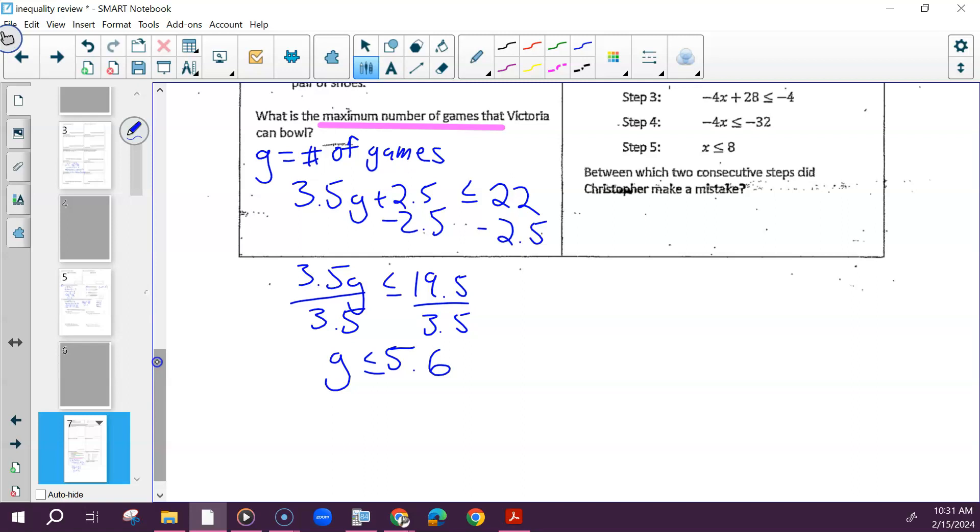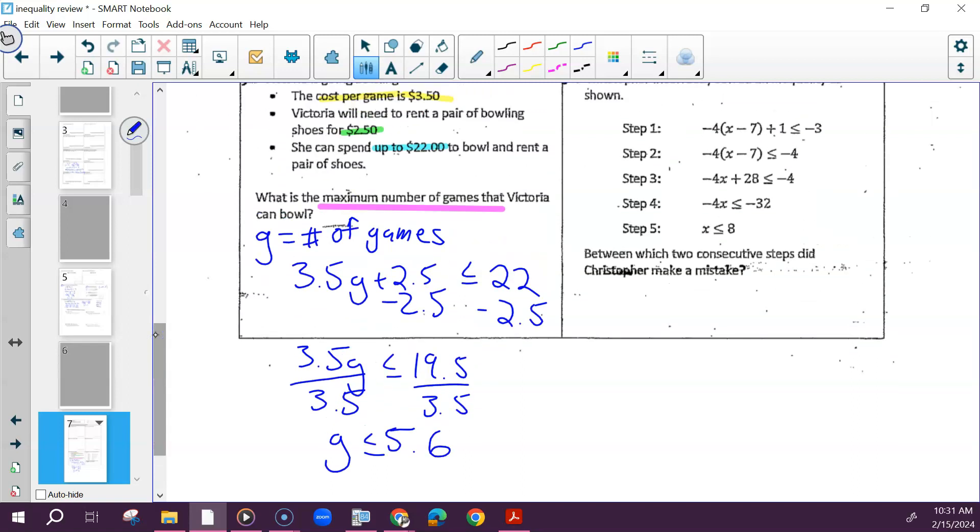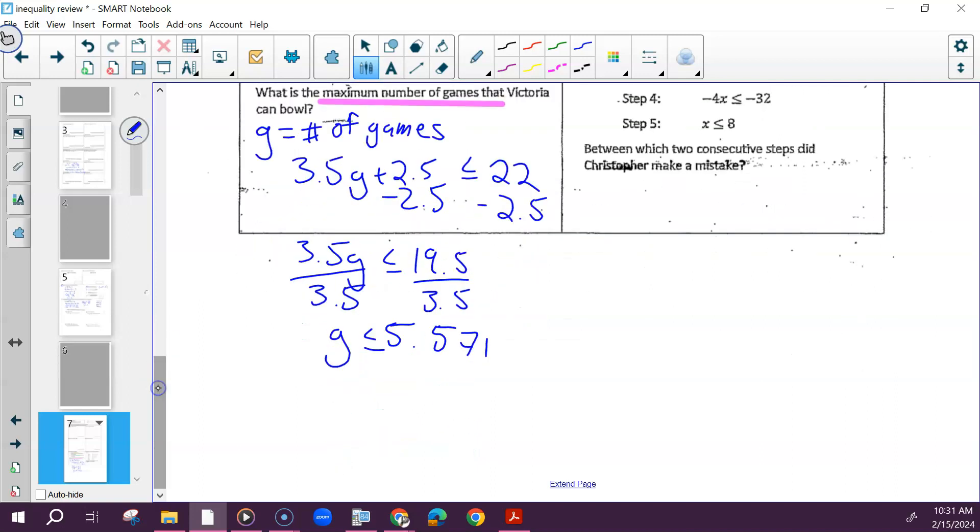Then how would we set up the rest of this inequality? 3.5G plus 2.5 is less than or equal to 22. And then let's solve that. Subtract 2.5 and divide. We can't have .6 of a game, so are we going to round up or down? So if I rounded up, would she go over her amount? So regardless, you can't have that of a game. It's recommended to round it down because she wants to stay under her limit. So if you round it up, this would go to 6, but then she'd go over her amount. So we've got to round it down to just 5. So she can play no more than 5 games if she wants to not go over her amount.